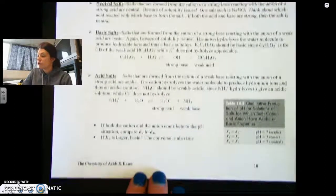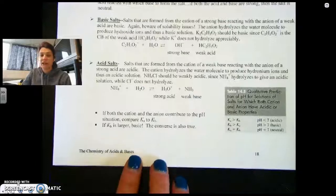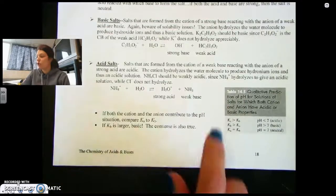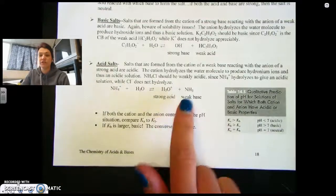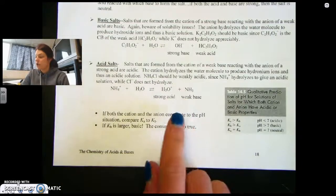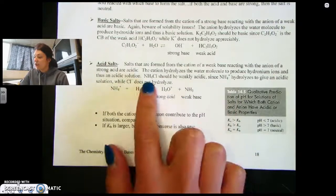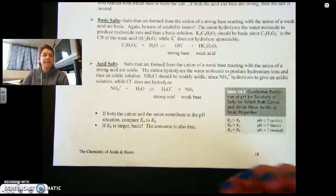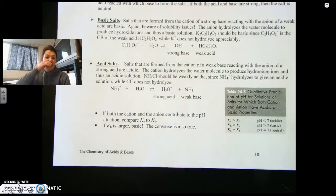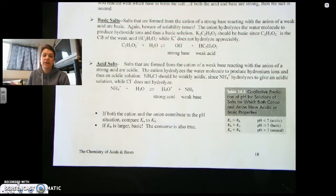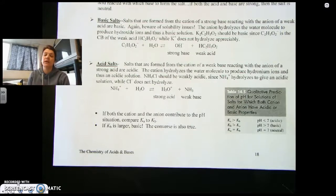Where if you have a strong acid that could be formed, the acid will win. NH3 is the weak base, so if I dissolve NH4Cl in solution, HCl — hydrochloric acid — is a strong acid. Therefore, the solution that you make will be acidic.